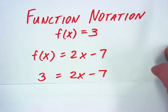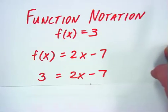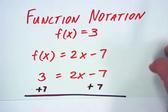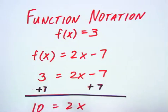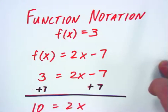Now I can solve this using the steps from any linear algebra type of a situation. So here I've got minus 7, so I'm going to add 7 to both sides. And I get 10 equals 2x, divide by 2, and x equals 5.